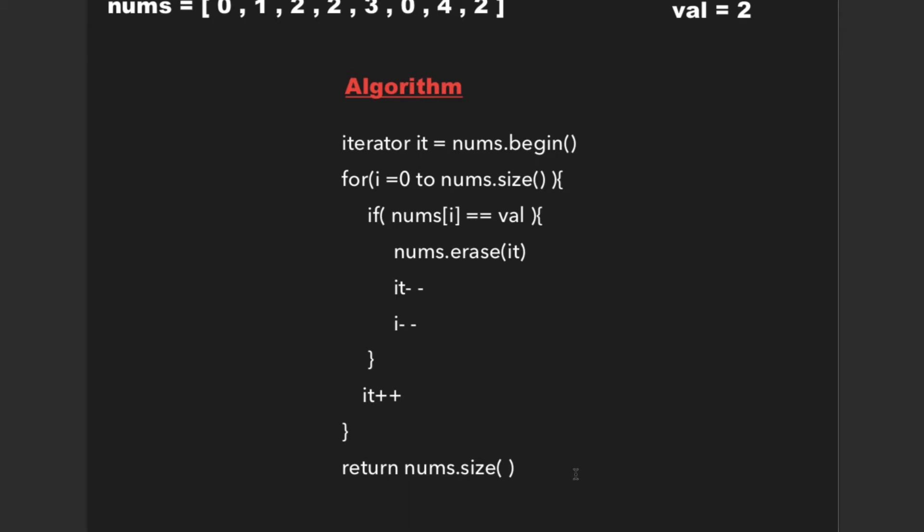go through the algorithm to solve this particular problem. Initially, we take an iterator and point it to the beginning of the nums array, and then traverse the nums array for i equals 0 to nums.size.